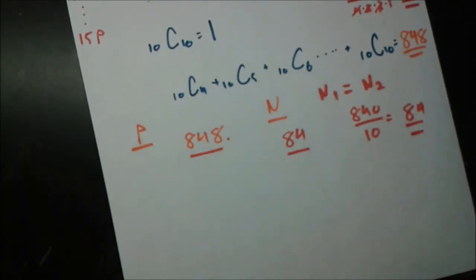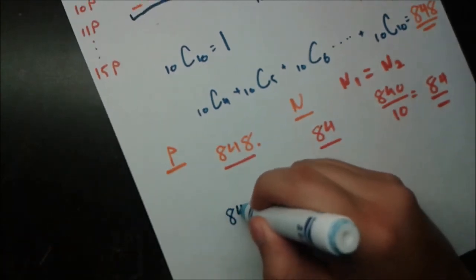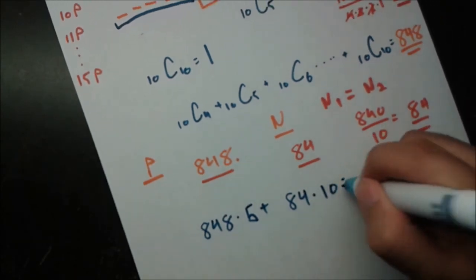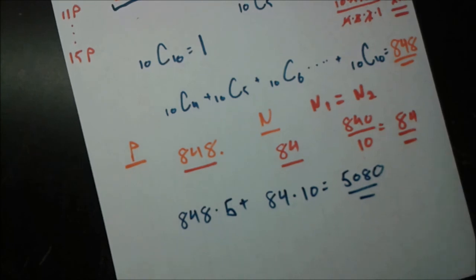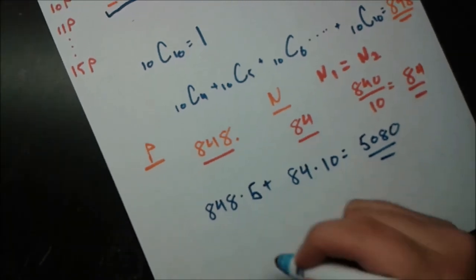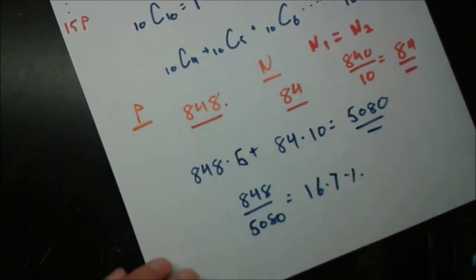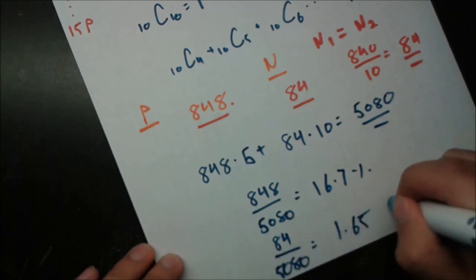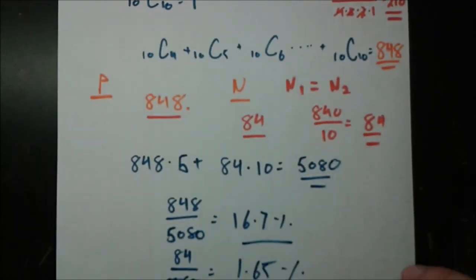Now we calculate the total critical counts: each of the 5 permanent nations is critical 848 times, and each of the 10 non-permanent nations is critical 84 times. So the total is 848 × 5 + 84 × 10 = 5,080. The Banzhaf power index of a permanent nation is 848 ÷ 5,080 = 16.7%, and for a non-permanent nation it's 84 ÷ 5,080 = 1.65%. Notably, 1.65 × 10 = 16.5, which is still less than 16.7 — so each permanent nation has over 10 times the power of each non-permanent nation.